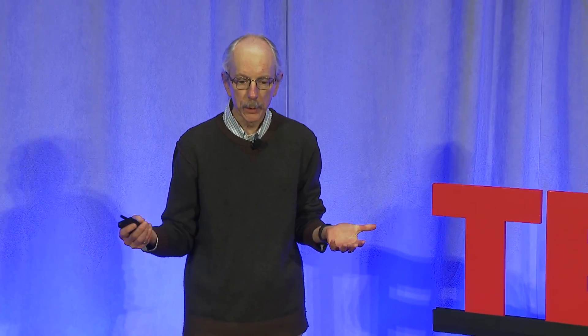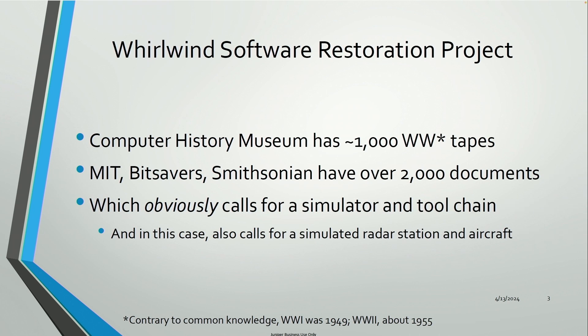The Computer History Museum in California has 1,000 tapes left over from Whirlwind — a combination of paper tapes and magnetic tapes. There are also various sources including the MIT Archive and Dome with over 2,000 documents left over from this program. They were required to submit reports all the time given the amount of government funding, so they had a department of report writing. Consequently, we can mine that material and learn about the machine. We have all these documents and all these tapes — let us put them together and see what we can make. As a technology person, the obvious answer was: we'll make a simulator. And that was the start of this project.